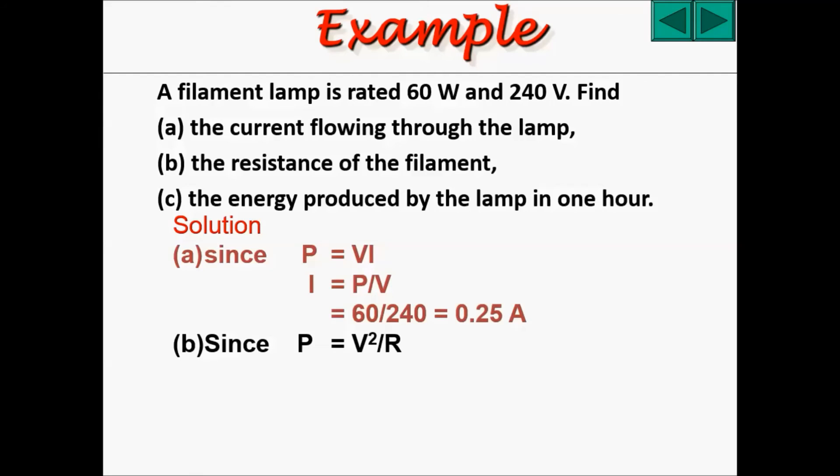For the resistance of the filament, we can use the subformula P equals to V squared over R. Changing the formula around, we should be able to get R equals to V squared divided by P. Subbing in, you should get 240 squared divided by 60, giving you 960 ohms.